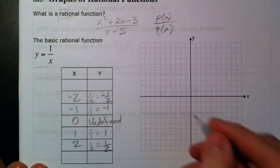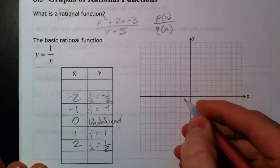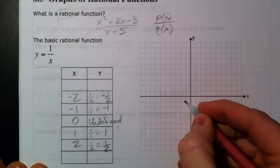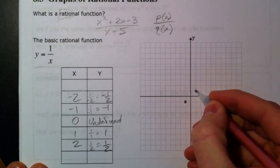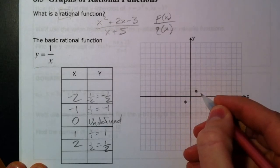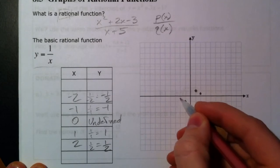Now, so we can plot those points. 0 being undefined, negative 1, negative 1, 1, positive 1. When we go over to 2, it's 1 half. When we go over to negative 2, it's negative 1 half.